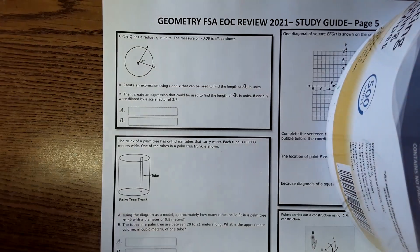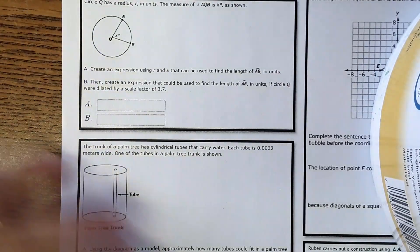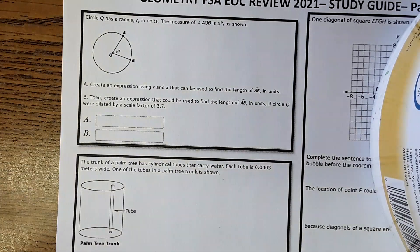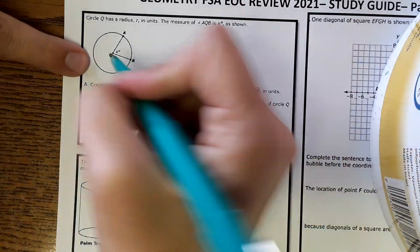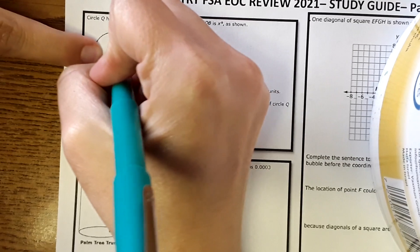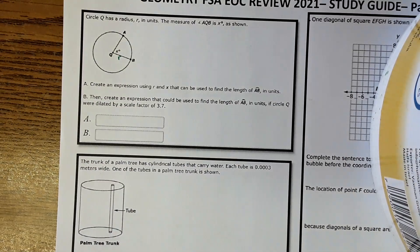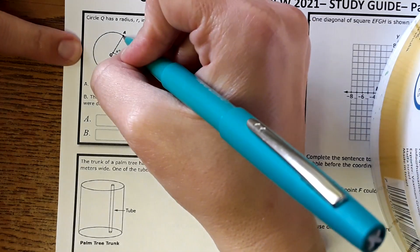Okay, so first one over here. It says you have circle Q, it has a radius R in units. The measure of angle AQB is X degrees as shown, so this would be R, the radius. Create an expression using R and X that can be used to find the length of arc AB.